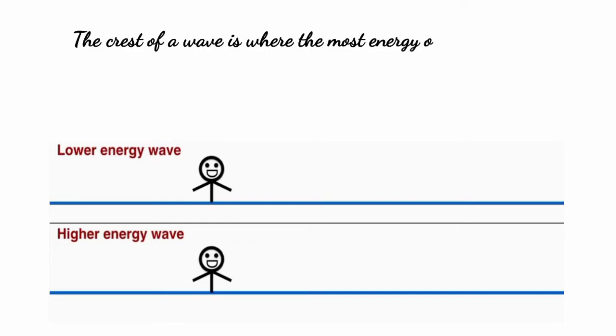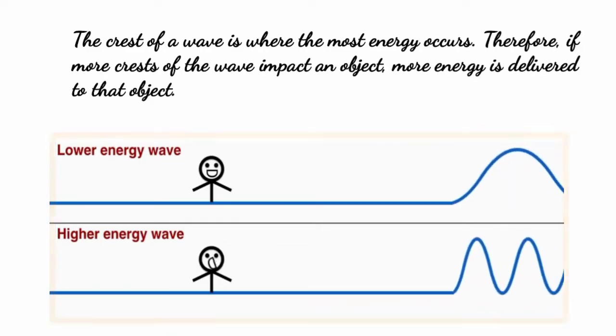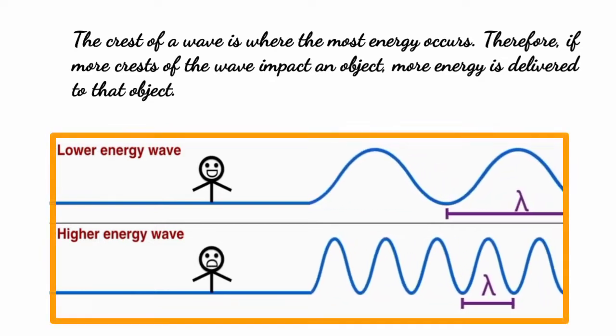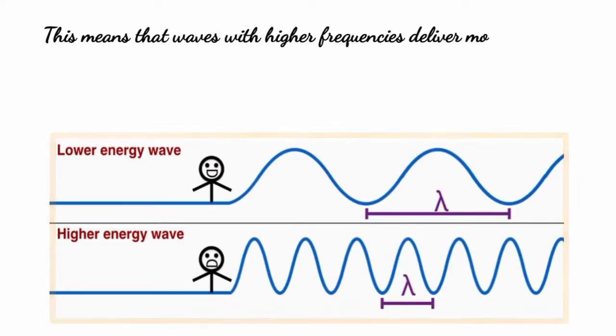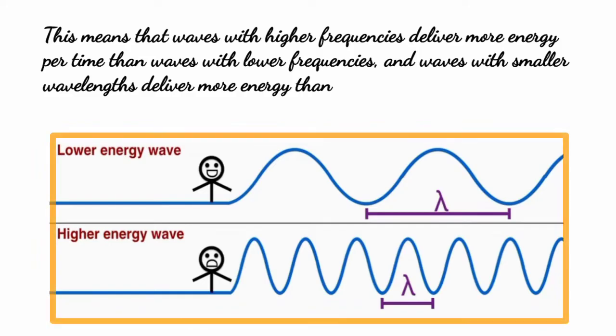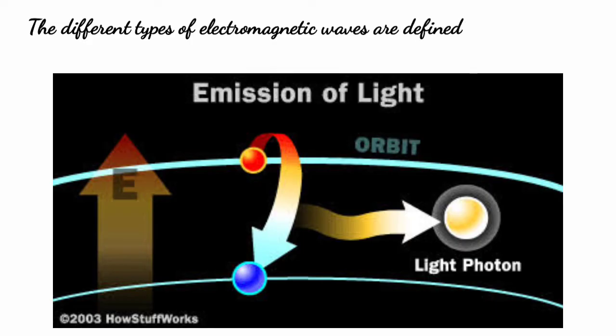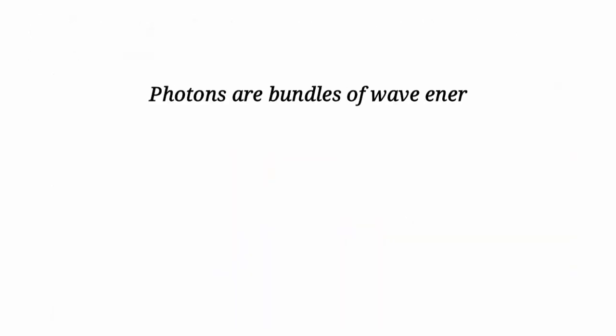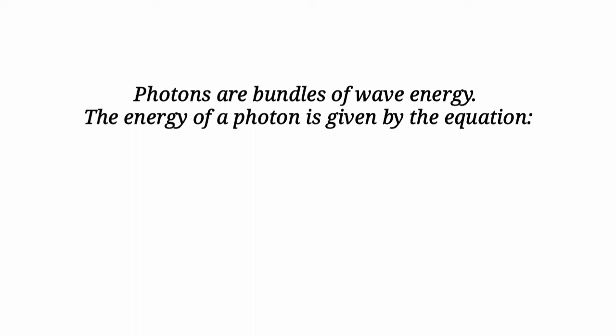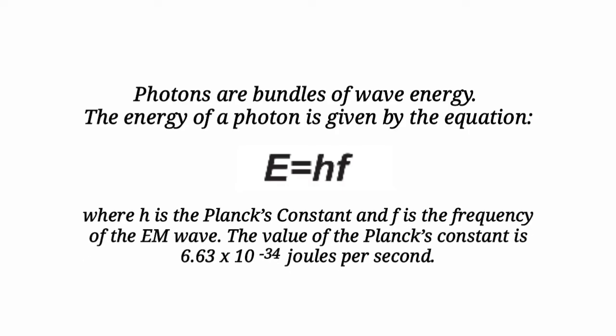The crest of a wave is where the most energy occurs. Therefore, if more crests of the wave impact an object, more energy is delivered to that object. This means that waves with higher frequencies deliver more energy per time than waves with lower frequencies, and waves with smaller wavelengths deliver more energy than waves with larger wavelengths. The different types of electromagnetic waves are defined by the amount of energy carried or possessed by the photons. The energy of a photon is given by the equation E equals the product of h and f, where h is the Planck's constant and f is the frequency of the EM wave. The value of the Planck's constant is 6.63×10⁻³⁴ joules per second.